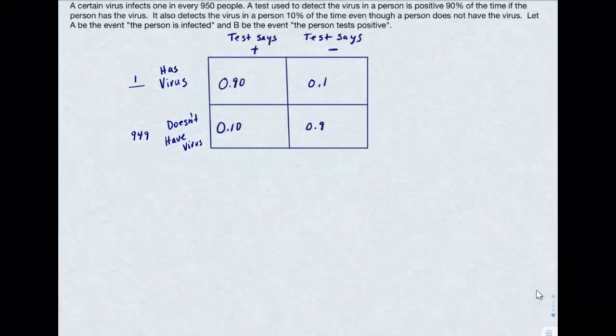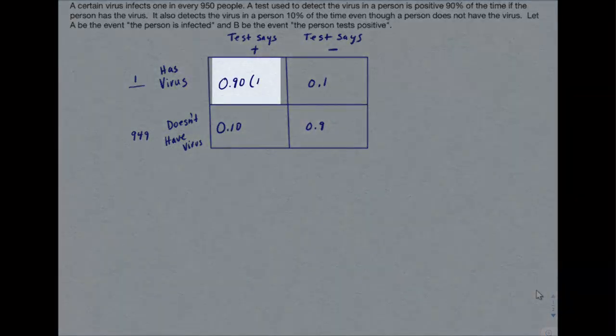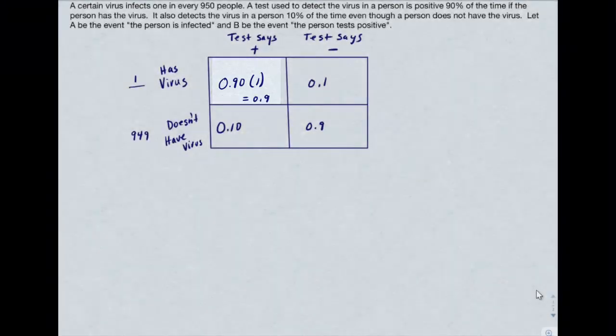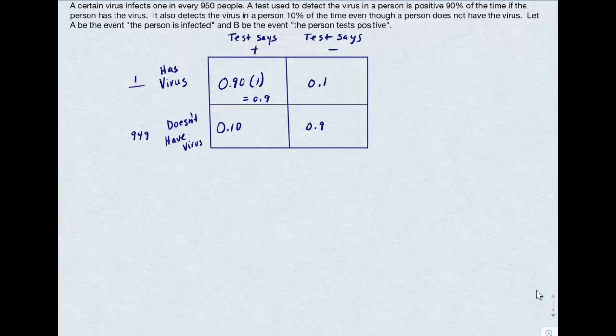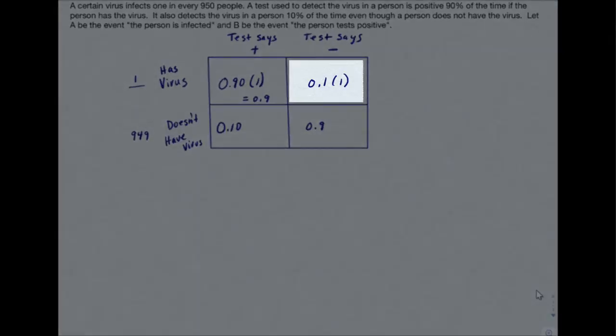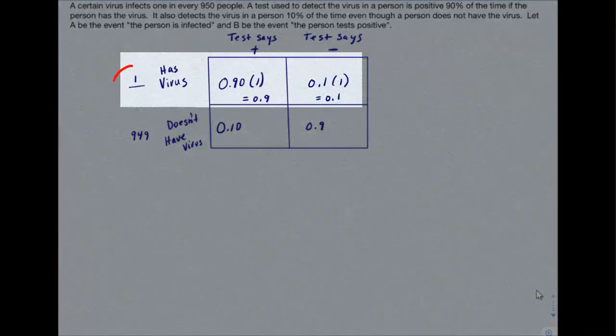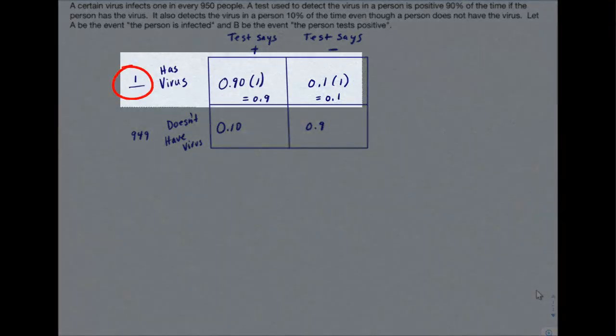So if one person has the virus, that means 0.9 or 90% of one will have a positive test result, and that equals 0.9. We're going to ignore the fact that we can't have 0.9 of a person. Again, if we have 10% of the time that person with the virus is going to show negative, we multiply 0.1 by 1 and get 0.1. And just to double check, 0.9 plus 0.1 does in fact equal 1.